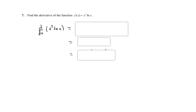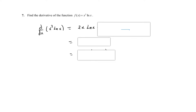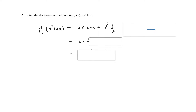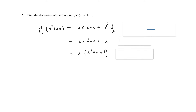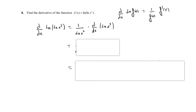Find the derivative of x²·ln(x). We have the product of two functions: f=x² and g=ln(x). The derivative is f'·g + f·g' = 2x·ln(x) + x²·(1/x) = 2x·ln(x) + x. Taking x as a common factor gives the final result: x·(2·ln(x) + 1).